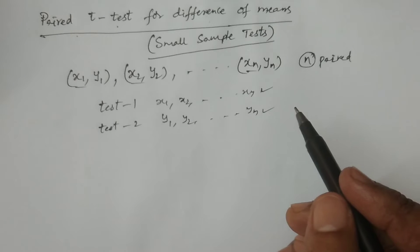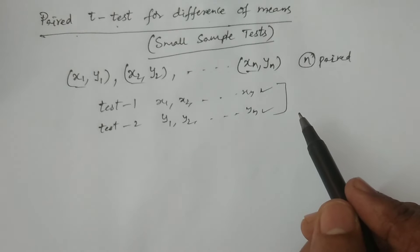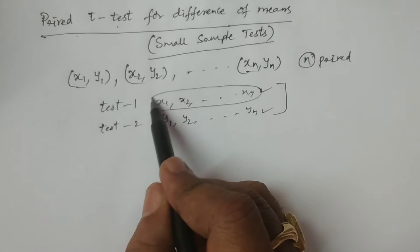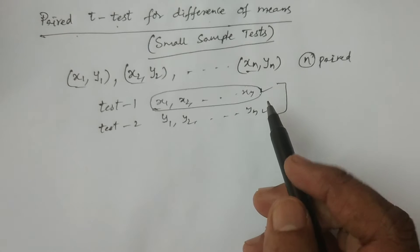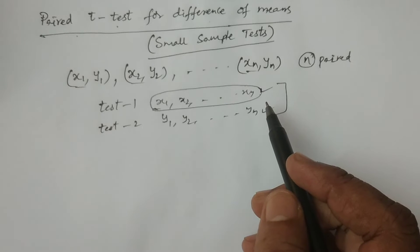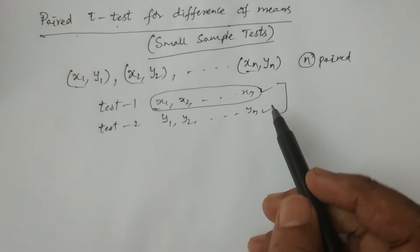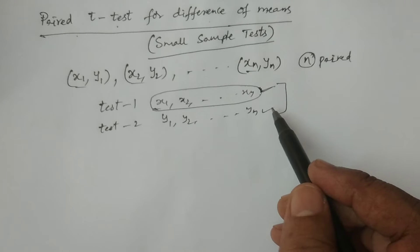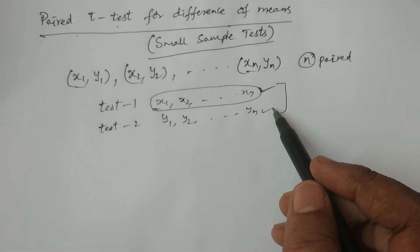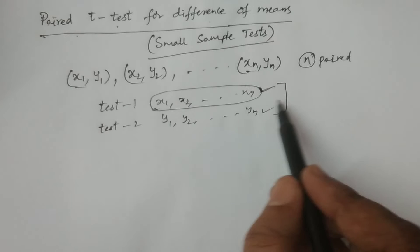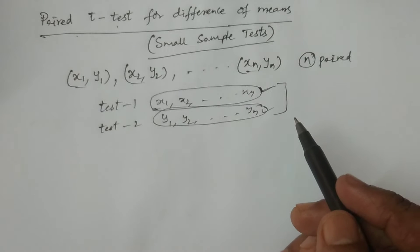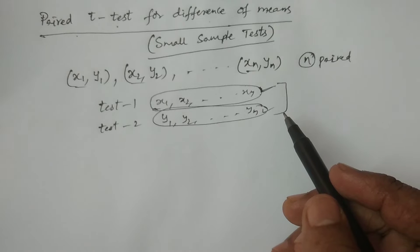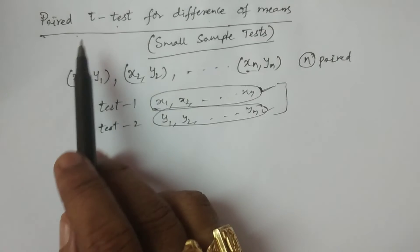Whether the coaching is effective or not, we have to use this particular test. Similarly, x1, x2, and so on, xn are the readings of some particular patients. A new kind of drug or medicine is applied to the patients. Before applying the new drug, these are the readings of some particular disease. And after applying the newly invented drug or particular medicine, these are the readings. Whether the medicine is effective or not, if you want to examine whether the medicine effectively worked on the patients, we have to use this particular paired t-test for difference of means.